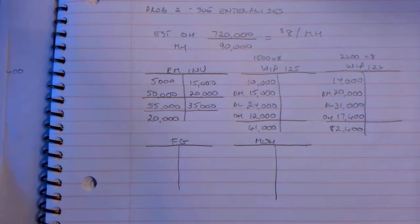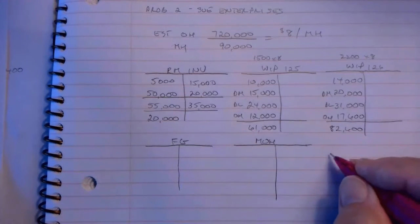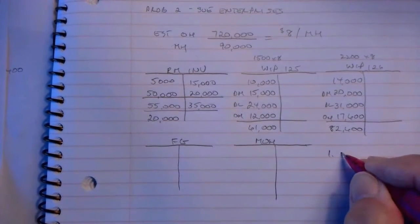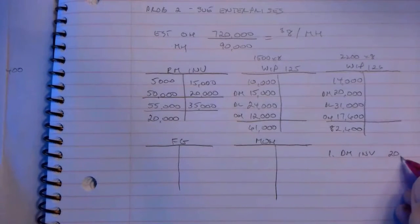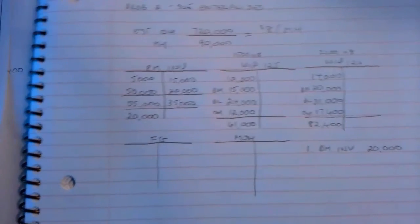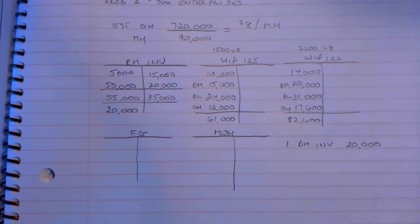That's for question number one. I'll put the answers here, so I'm going to say direct material inventory is $20,000.